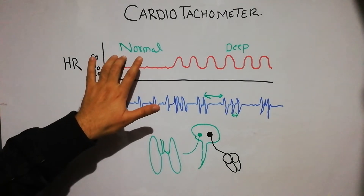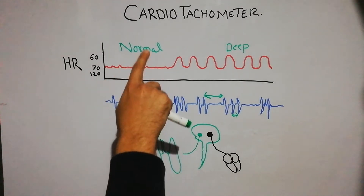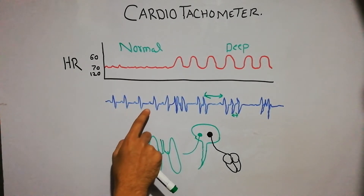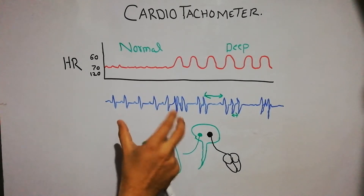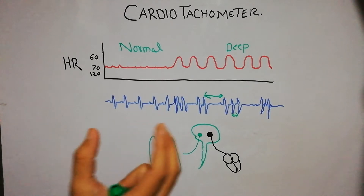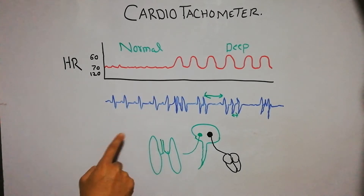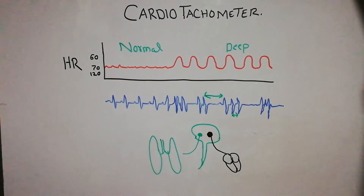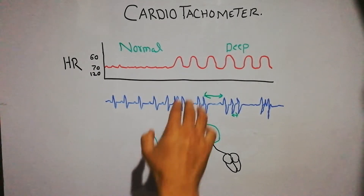The initial recording shows the normal pattern of breathing. With the normal pattern of breathing, this cardio tachometer shows that the variation in the heart rate is almost negligible — there is almost no change, or about a 5% change, in the heart rate in the duration of successive QRS complexes while a person is breathing normally.